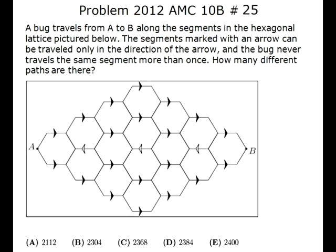A bug travels from A to B along the segments in the hexagonal lattice. The segments marked with an arrow can be traveled only in the direction of the arrow, and the bug never travels the same segment more than once. How many different paths are there?